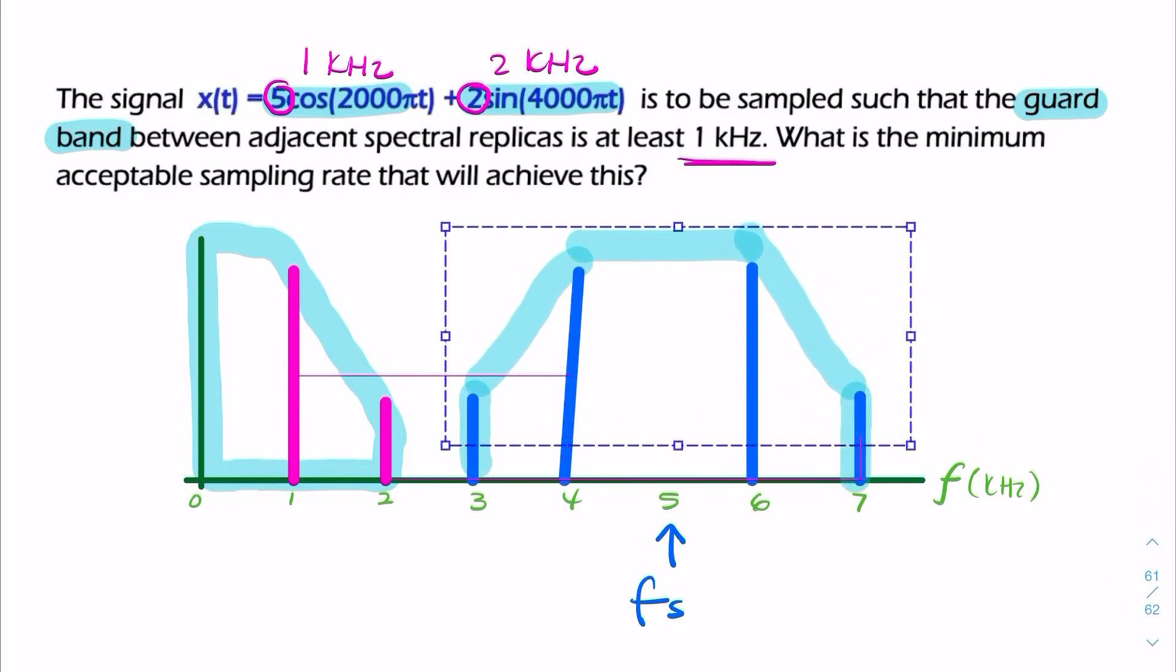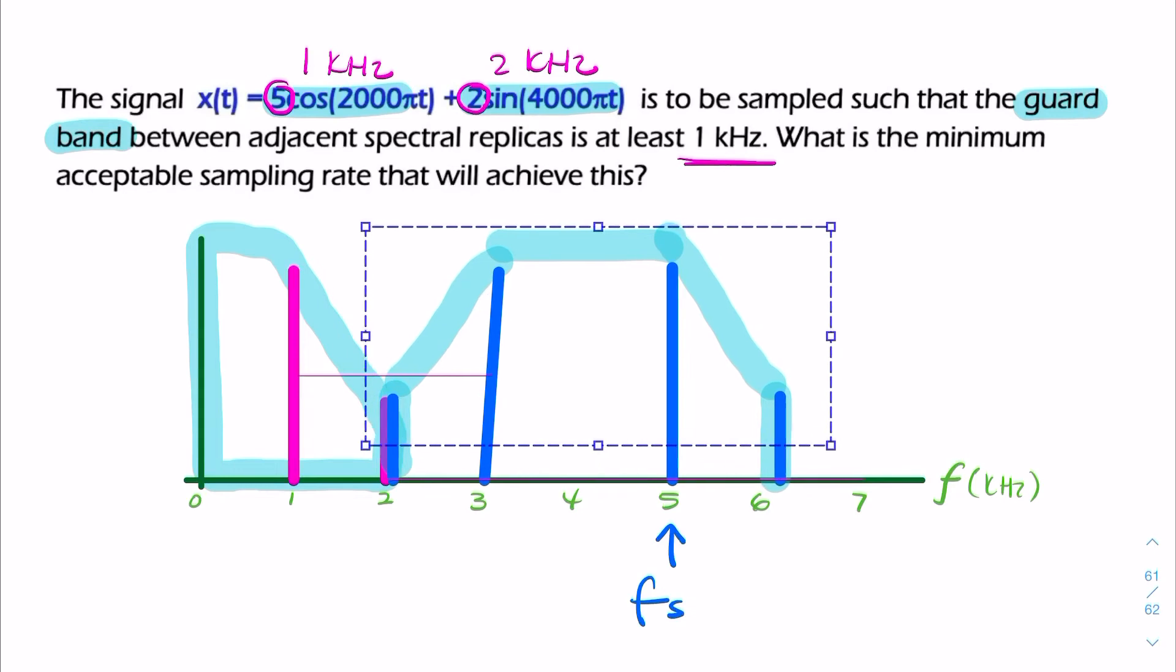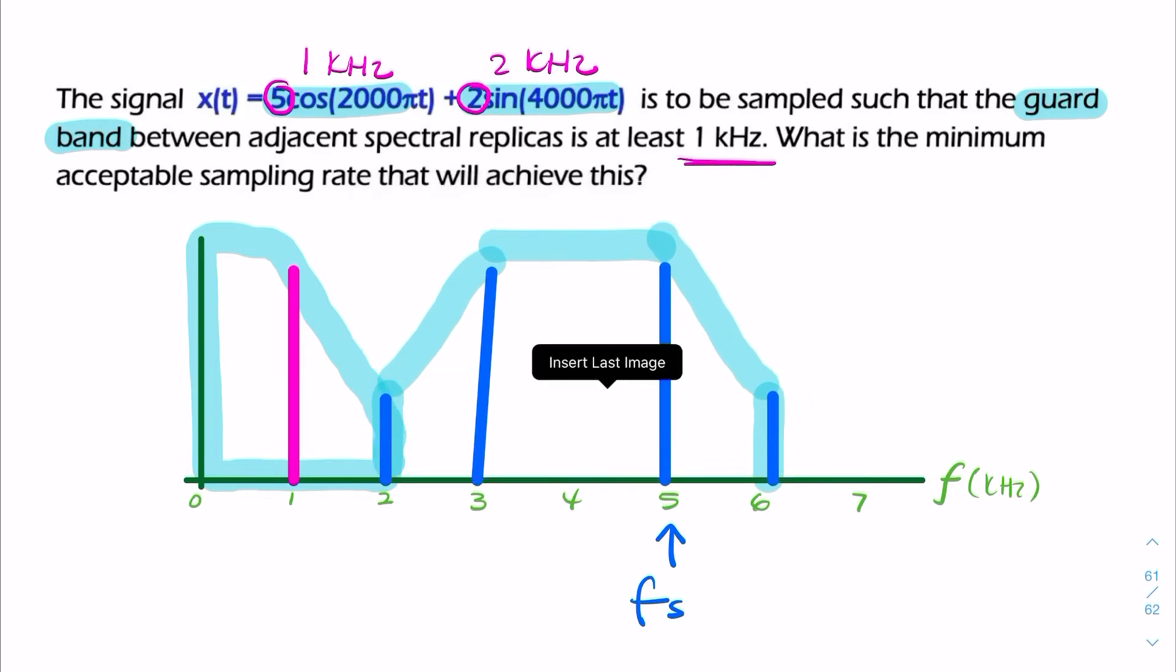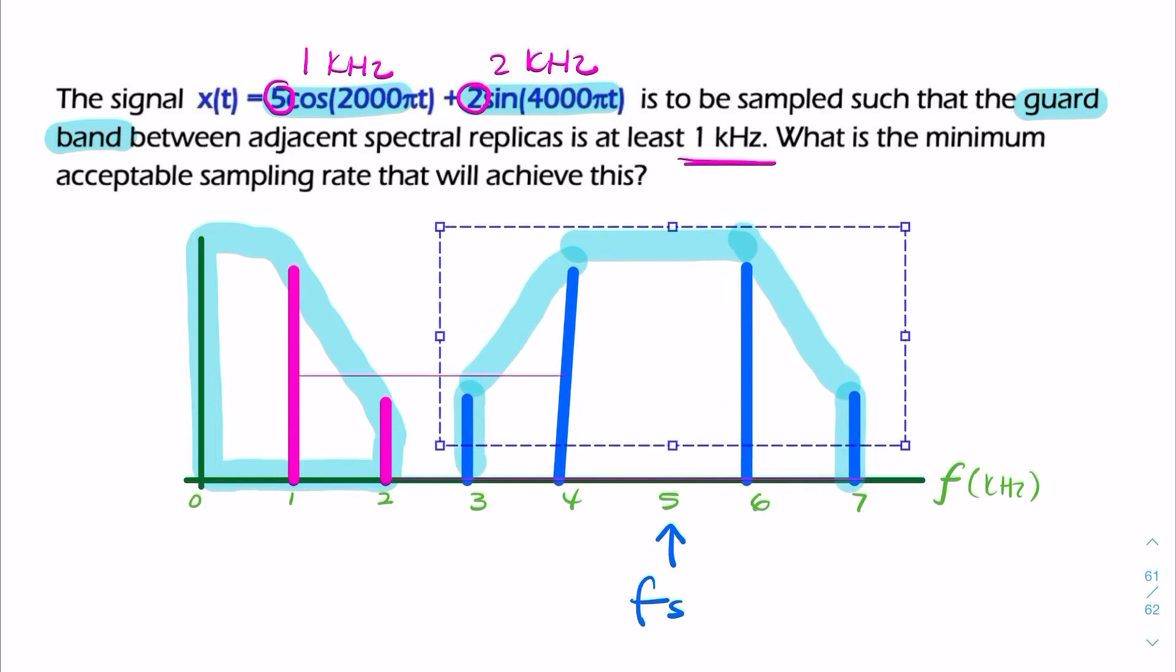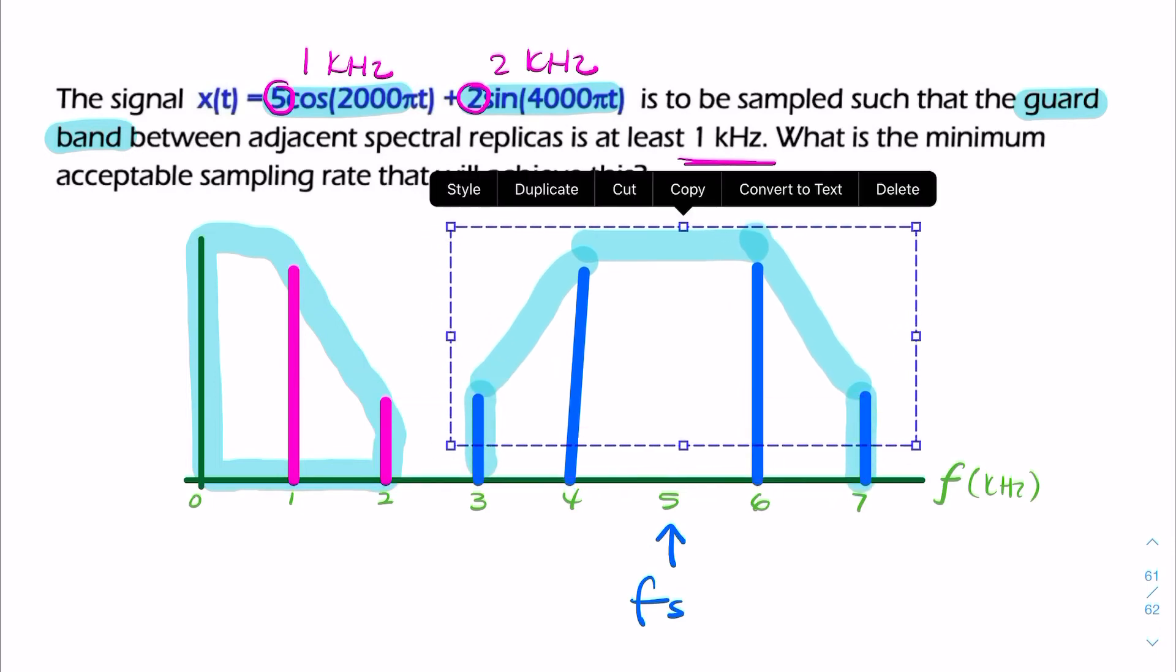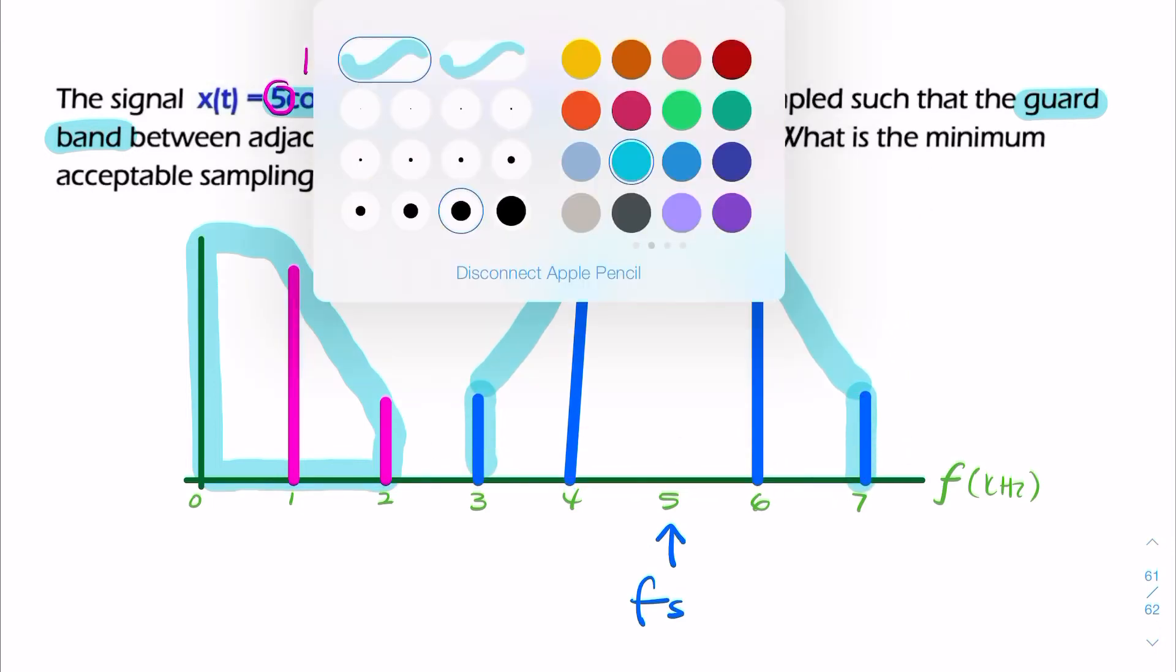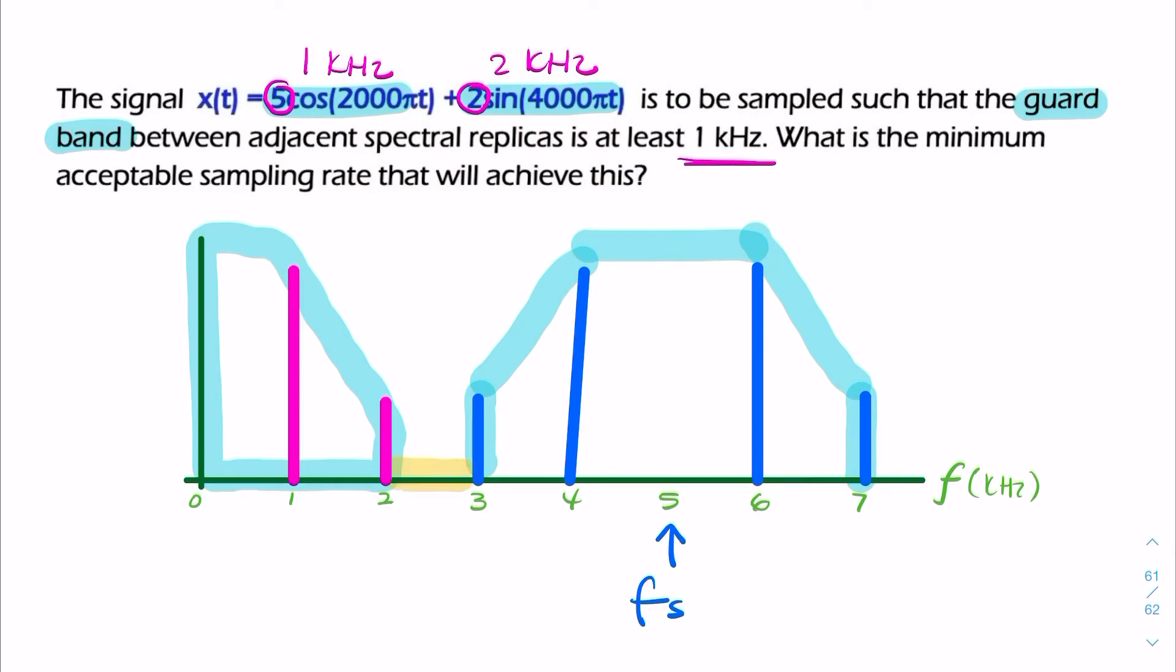So if it was critically sampled, we'd have the overlap between the replica at 2 kilohertz and the message at 2 kilohertz. Whereas, if we were to oversample, we would have this guard band. So right now, we have this 1 kilohertz guard band.